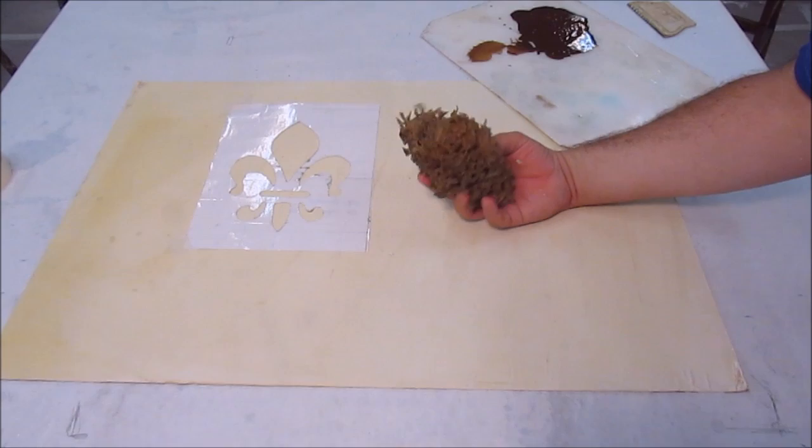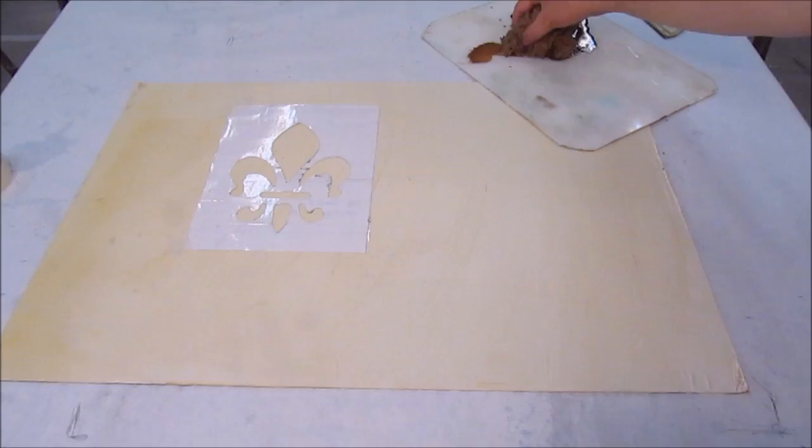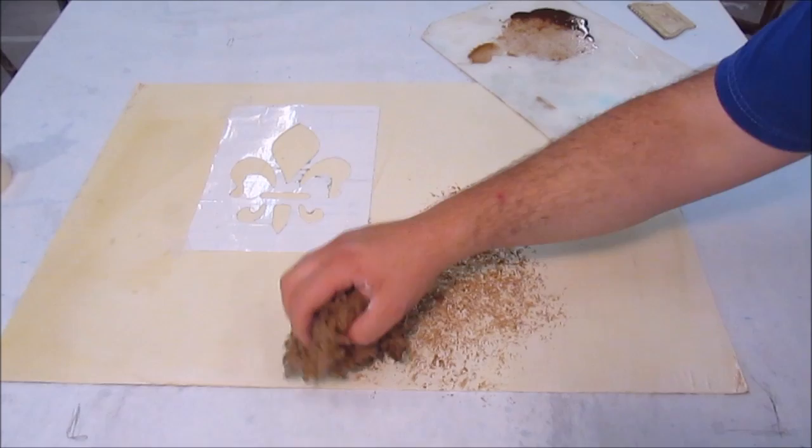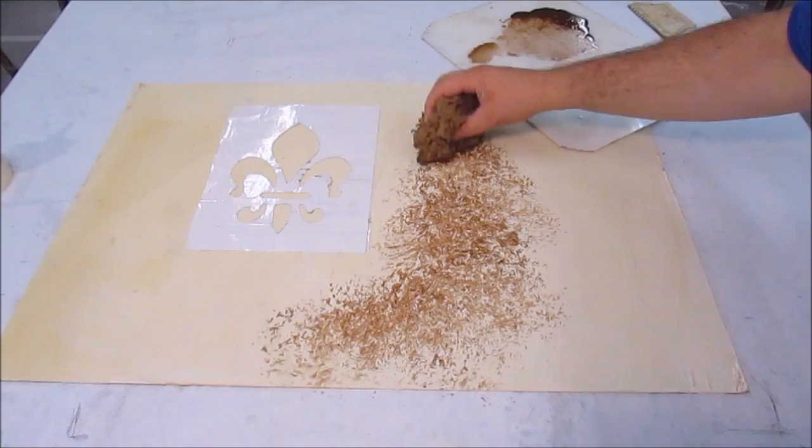There are plenty of other synthetic kinds of sponges that can create similar effects, but these natural sea sponges are terrific for creating nice organic patterns. They're great for toning down an area, adding a bit of color, giving some patina or soot.